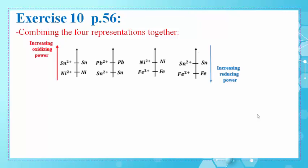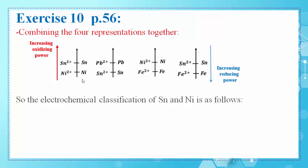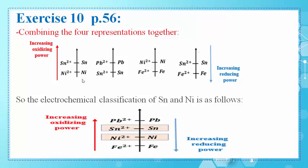By combining the four representations together: Sn2+/Sn is above Ni2+/Ni in the first classification; Pb2+/Pb is above Sn2+/Sn in the second; and Ni2+/Ni is above Fe2+/Fe in the third. The final electrochemical classification is: Pb2+/Pb above Sn2+/Sn, above Ni2+/Ni, and all above Fe2+/Fe.